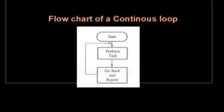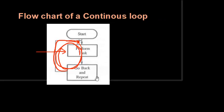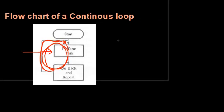Here is the flowchart of a continuous loop. Suppose we have some tasks to be performed — we start, perform the task, go back and repeat. This is repeated again and again. As we can see, this is a never-ending loop that goes on continuously performing this task.